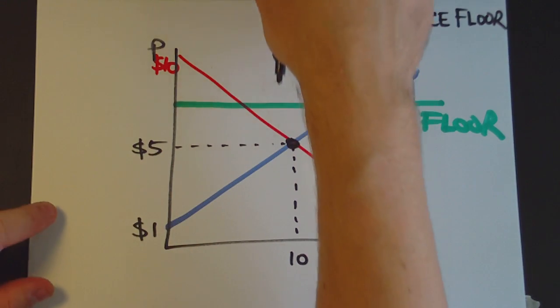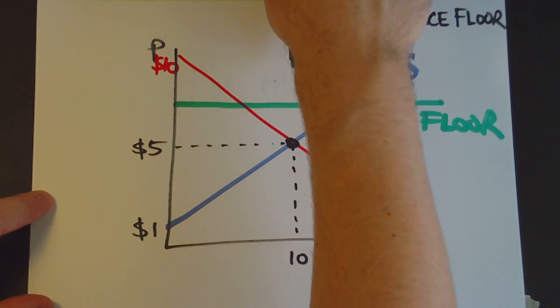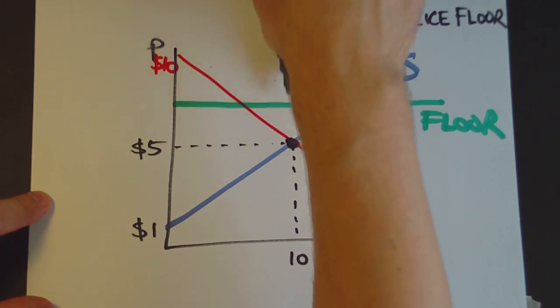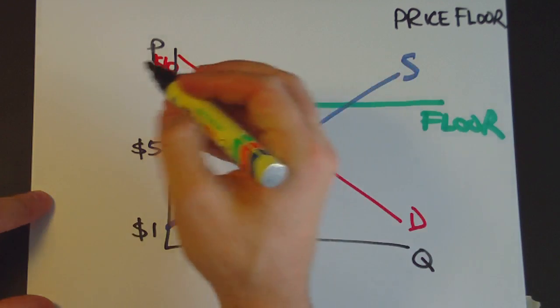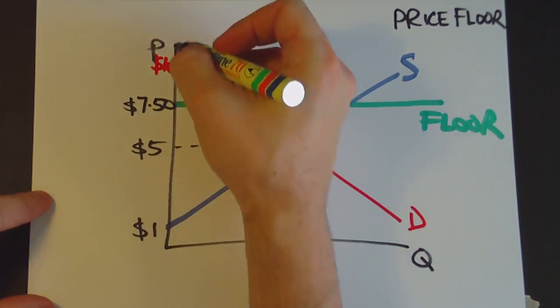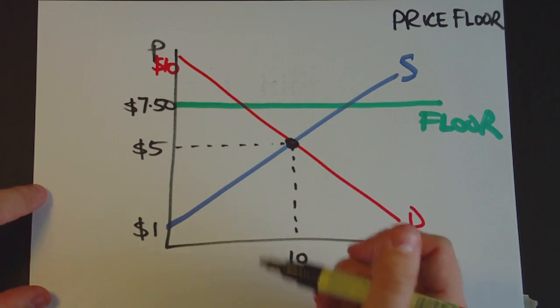from dropping below that level. So the natural gravity of the market mechanism indicates that the price should actually move and gravitate towards this equilibrium point down here, but the price floor prevents that. Actually, I'm going to make this $7.50 just so it's halfway in between $10 and $5 and it makes the numbers a bit easier.